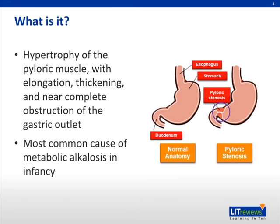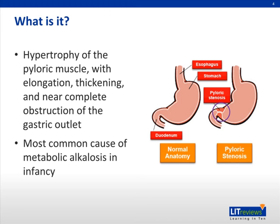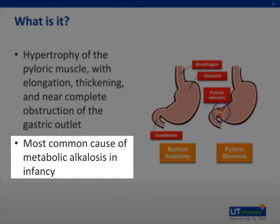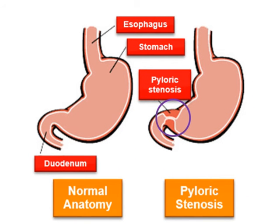What is pyloric stenosis? Pyloric stenosis is hypertrophy of the pyloric muscle with elongation, thickening, and near-complete obstruction of the gastric outlet. It was first described as early as 1717 in Europe, and by 1887 the pathology was understood. This is the most common cause of metabolic alkalosis in infancy. You can see on the diagram at the right the hypertrophy of the muscle where the pyloric stenosis obstructs the gastric outlet.